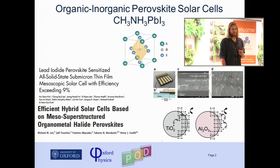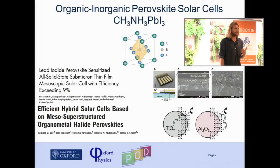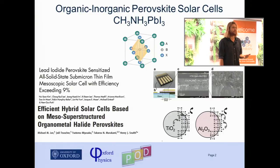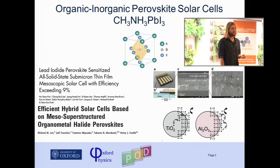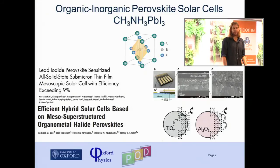Third, the materials have very controllable band gaps, so you can play with the halide content of the crystal structure. That way you can tune the band gap from around two electron volts down to 1.4 electron volts. This is very important if we want to use the material as a top cell in tandem cells, for example with silicon as the back cell. This is becoming more and more realistic since silicon cells are becoming rapidly — maybe even painfully for this community — cheaper. So we can use these as very cheap top cells in silicon tandems.